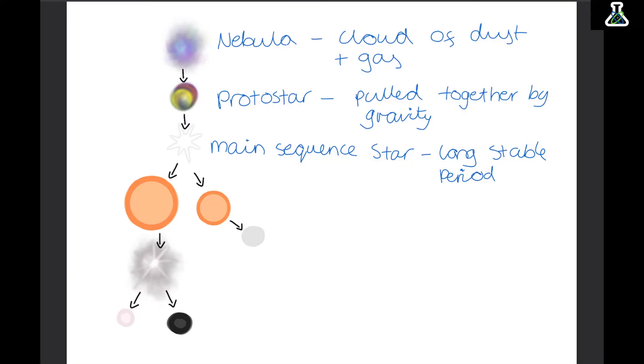Now after a main sequence star we have two different options. So the first option is it can become a red giant. And this is for smaller stars like our Sun. But the other option is it can become a red supergiant. Now red giant and red supergiant has run out of all its hydrogen. So it can't continue nuclear fusion. Instead it gets really really big.